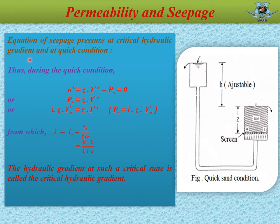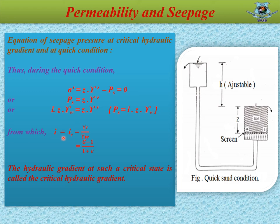Equation of seepage pressure at critical hydraulic gradient and at quick condition: when seepage pressure and the submerged weight of the soil become equal, the effective pressure will be zero. Thus, during the quick condition, effective pressure σ' = pressure of submerged soil minus seepage pressure. In quick condition, effective pressure σ' = 0. So, σ' = Z × γ' − PS = 0. As PS = I × Z × γW, we can write I × Z × γW = Z × γ'. Finally, we get the critical hydraulic gradient I_c = γ'/γW = (G − 1)/(1 + e). The hydraulic gradient at such a critical state is called the critical hydraulic gradient.